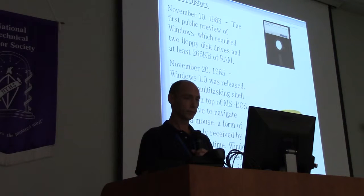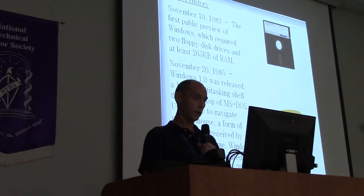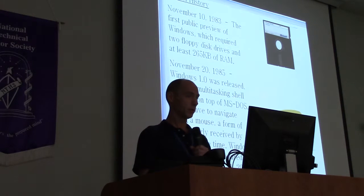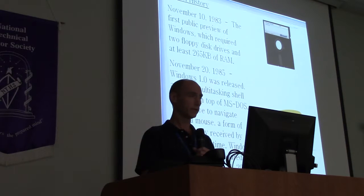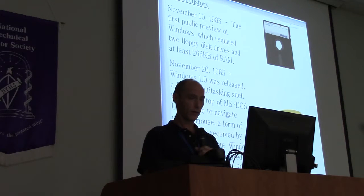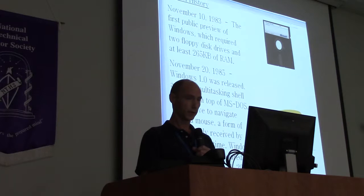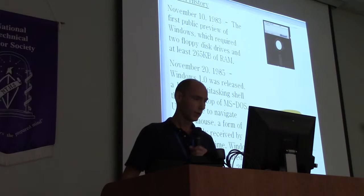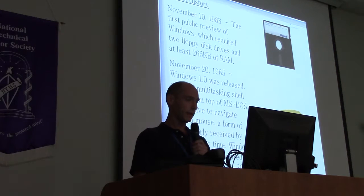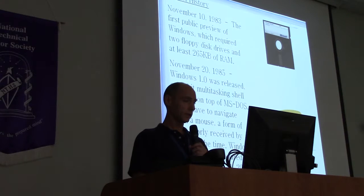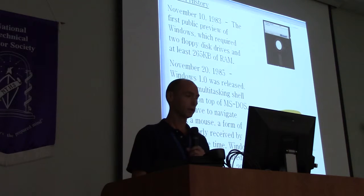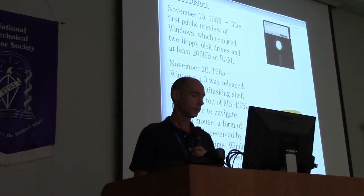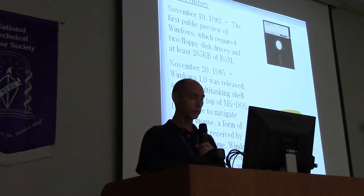Here's a brief history on the timeline of Windows. November 10, 1983: the first public preview of Windows, which required two floppy disks and at least 265 kilobytes of RAM, which ran on the 5.25 floppy disk. Then November 20, 1985: Windows 1.0 was released — a 16-bit multi-tasking shell sitting on top of MS-DOS. Users had to navigate using a mouse, a form of input poorly received by critics at the time.